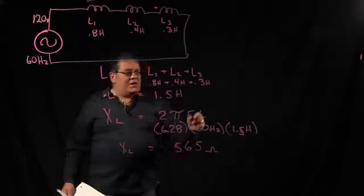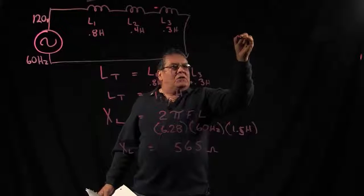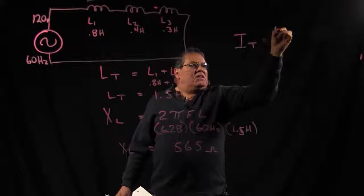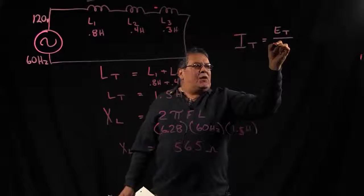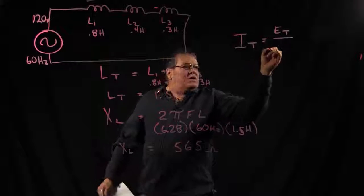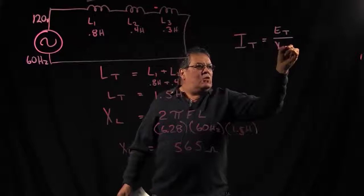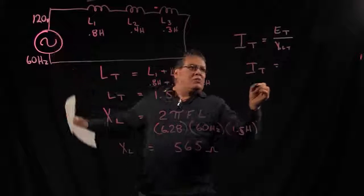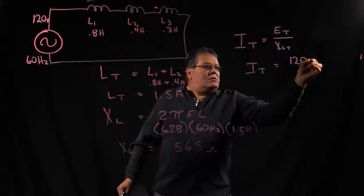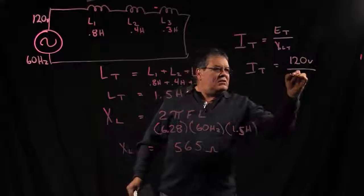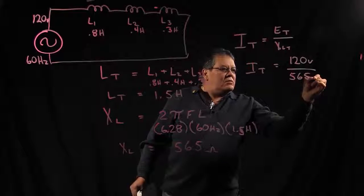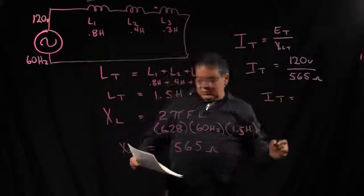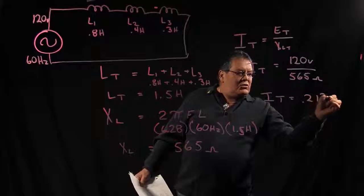So now if we wanted to find our total current, we're going to use simply Ohm's law again, which is our E total divided by—instead of R total—our inductive reactance total. I total equals our source voltage of 120 volts divided by our inductive reactance of 565 ohms. This gives an I total of 0.212 amps.